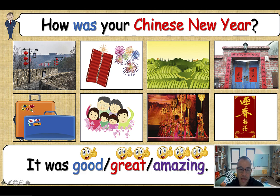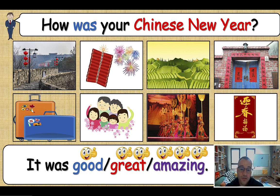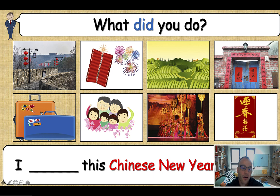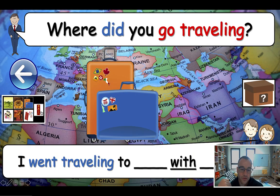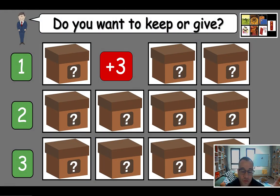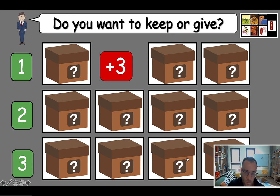You ask the next student — just click back to change the question. 'How was your Chinese New Year?' This student says 'It was amazing.' You say 'What did you do?' They say 'I went traveling.' So you click on 'went traveling' and it takes you to that slide. The class asks 'Where did you go traveling?' — again, focusing on the past tense. They say 'I went traveling to Shanghai with my cousin.' Click on the mystery box and you say 'Which mystery box do you want?' They choose, say 'I want three.' You say 'Do you want to keep or give?' They say 'I want to give — to team four.' You click it and team four gets two points.